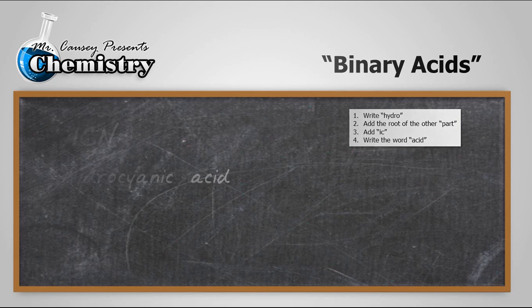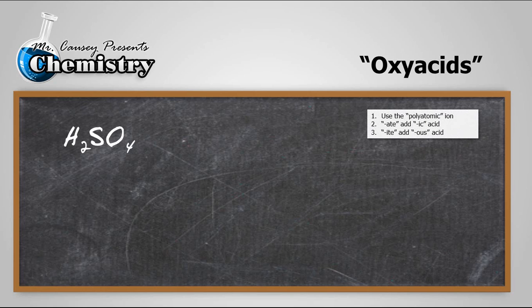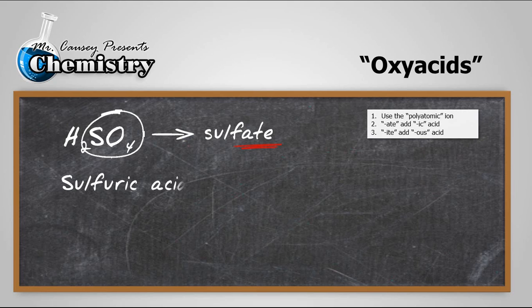Now let's jump over and do some oxyacids. H2SO4. And then what we want to remember here is our rules and that the oxyacids are named according to their polyatomic ion. So SO4 is the polyatomic ion. And it means sulfate. So if you'll notice over here we're going to add IC. ATE means add IC. So sulfuric acid.